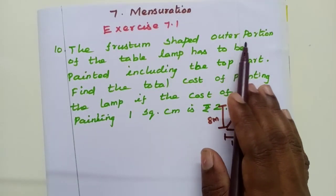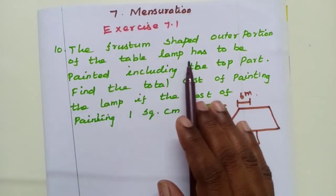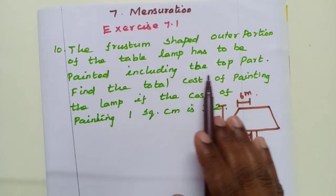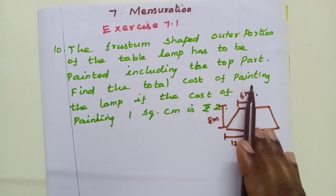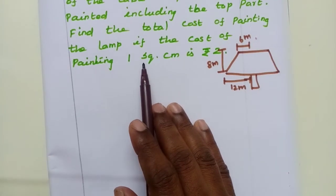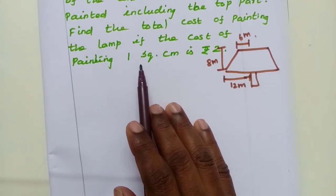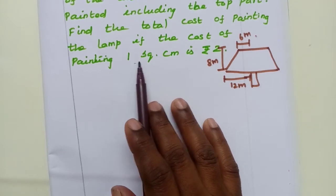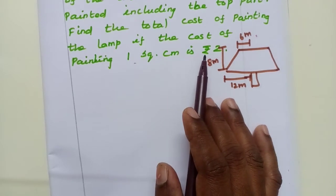The frustum shaped outer portion of the table lamp has to be painted including the top part. Find the total cost of painting the lamp if the cost of painting 1 square centimeter is rupees 2.